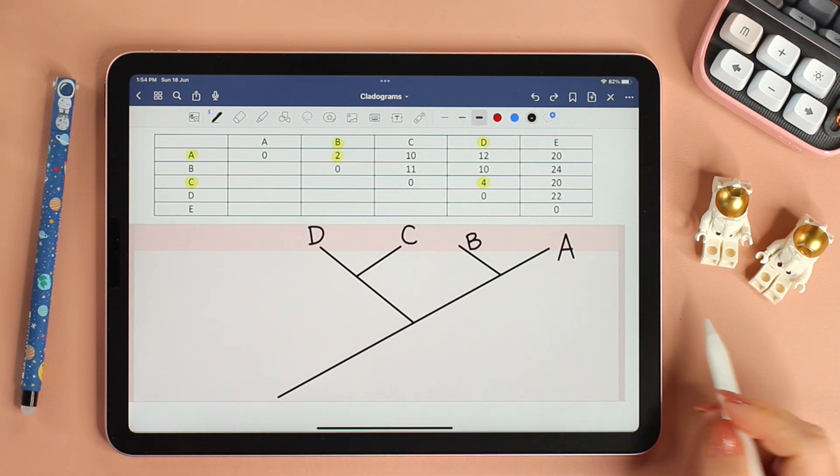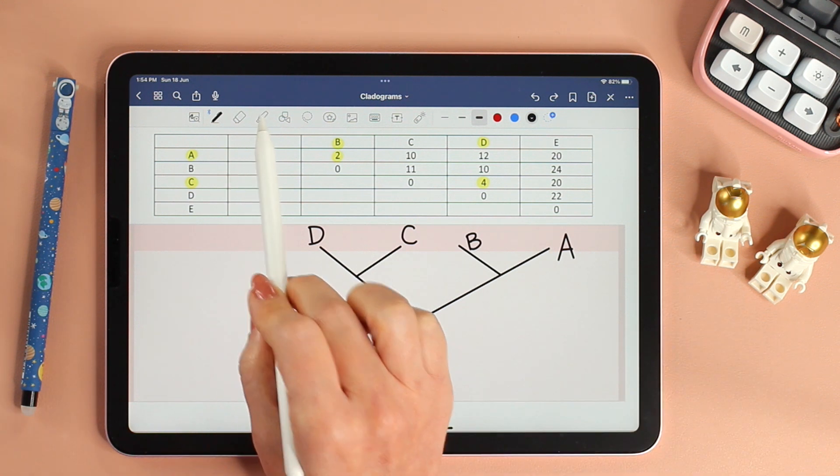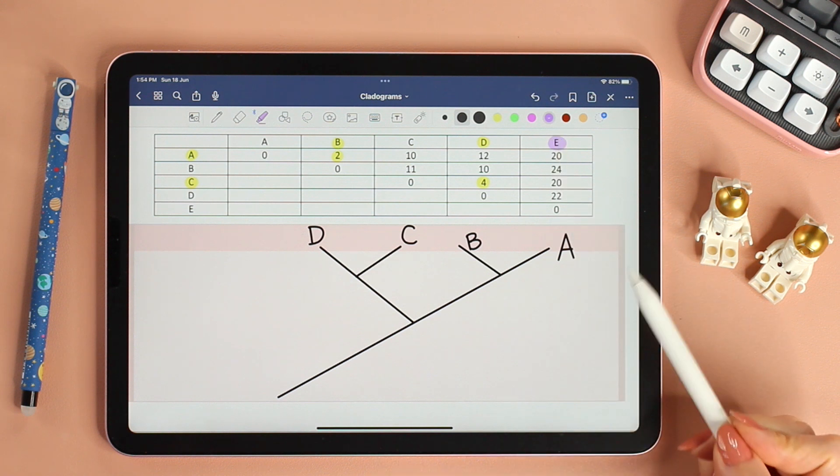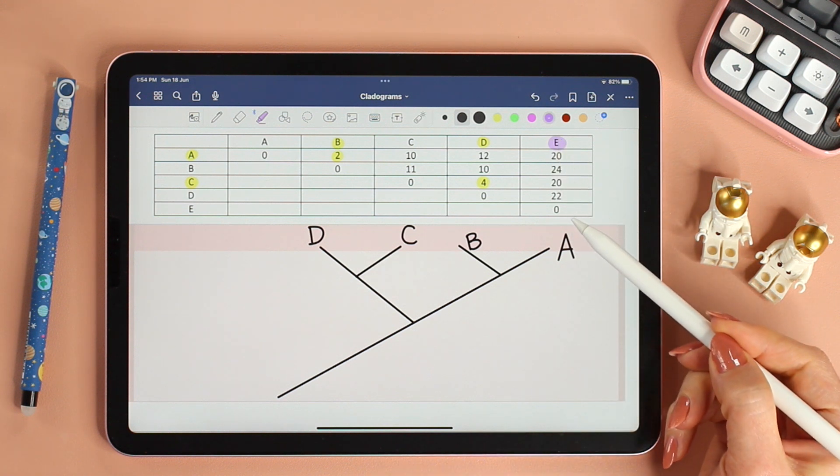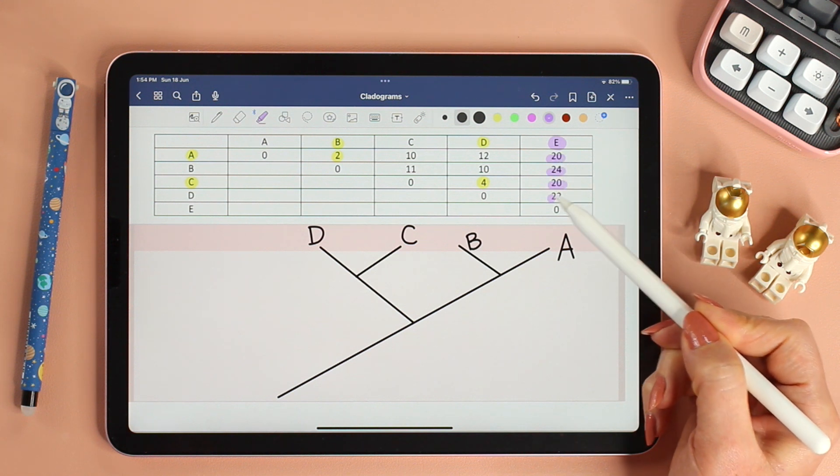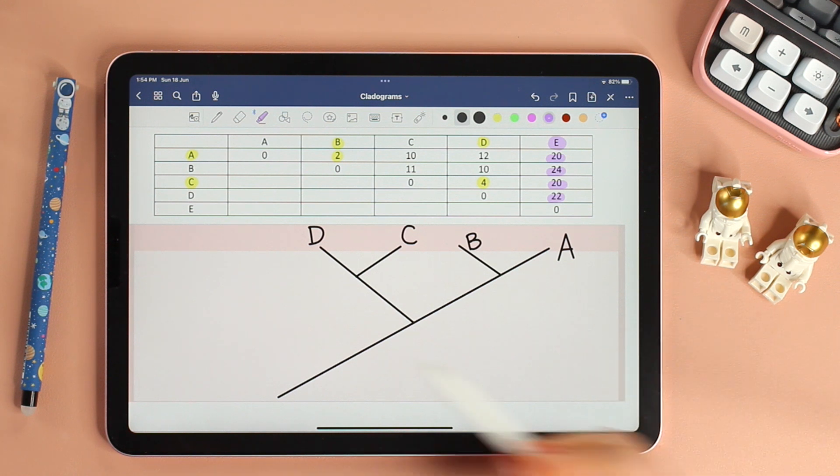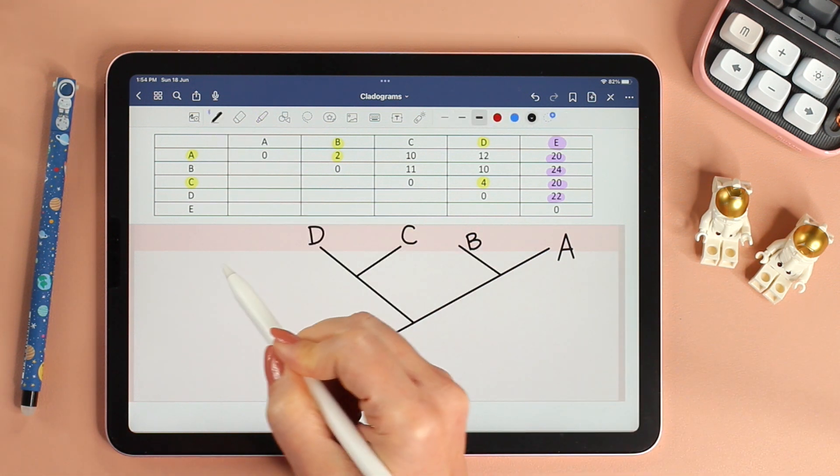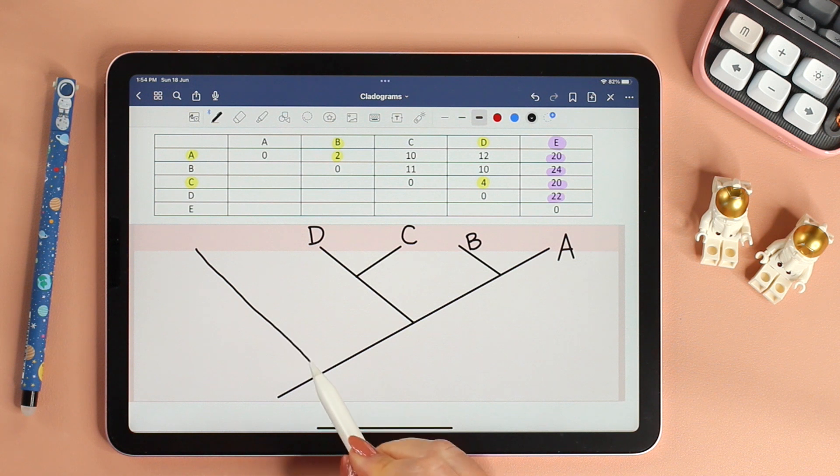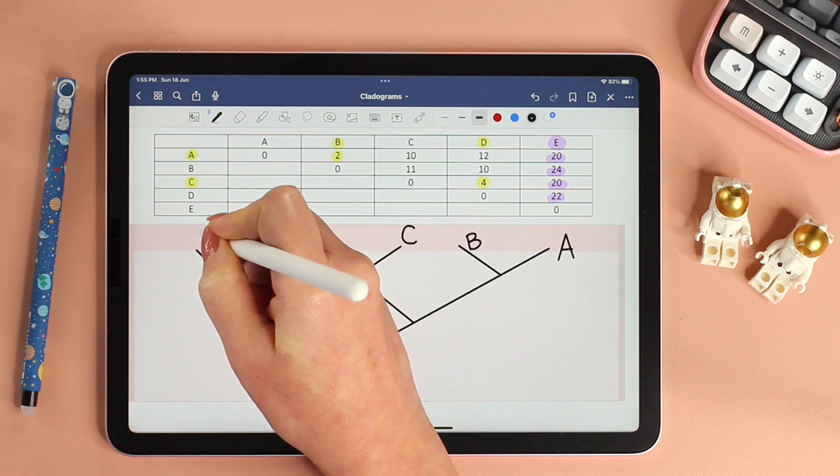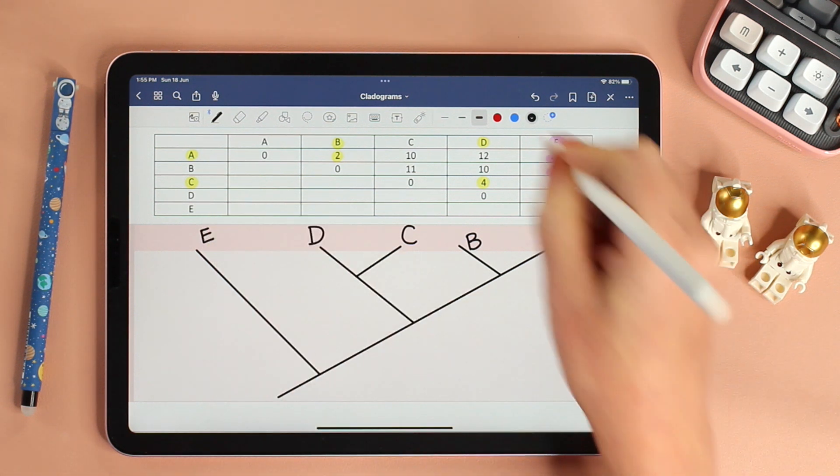Now that we have placed four out of our five species, we have E left. If we look at the column for E, the number of differences between E and each of the other species is very high. This means E is the least similar to the others. Therefore, we will place E at the bottom of the tree.